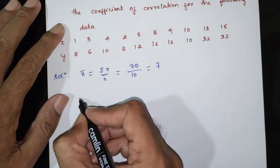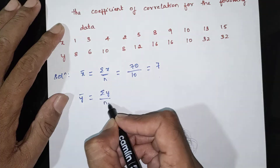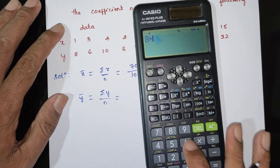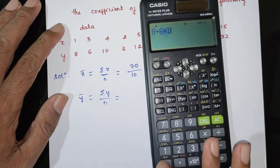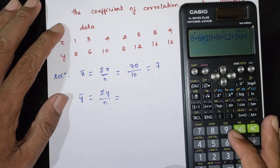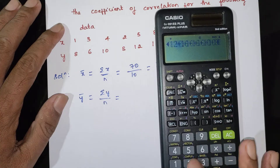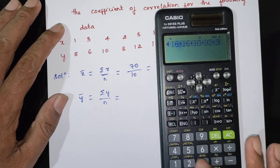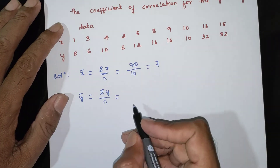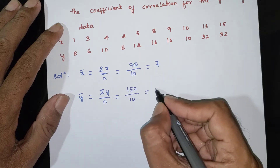Now find ȳ. ȳ = summation of y divided by n. Summation of y: 8 + 6 + 10 + 8 + 12 + 16 + 16 + 10 + 32 + 32 = 150. So ȳ = 150 / 10 = 15.